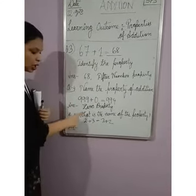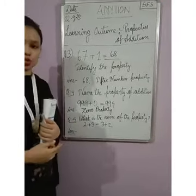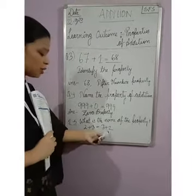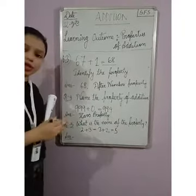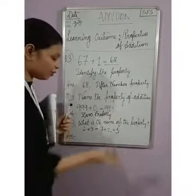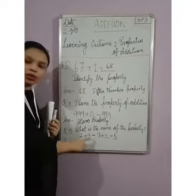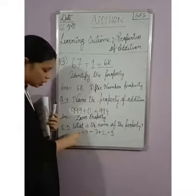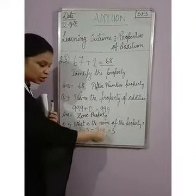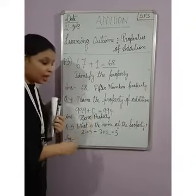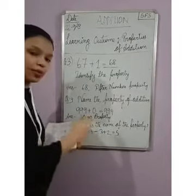The next question is: name the property of addition. Given: 2 plus 3 equals to 3 plus 2. The answer is 5. You can count and check — 2 plus 3 equals 5, and 3 plus 2 also equals 5. But notice that the order of the numbers has been changed: 2 is first and 3 is second on the left, but 3 is first and 2 is second on the right. However, it does not change the answer; the answer remains the same.